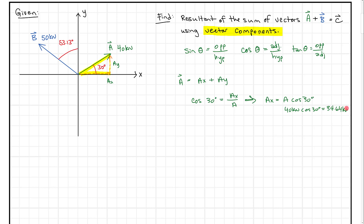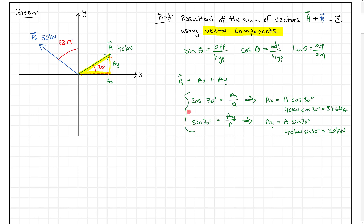Now we'll apply sine. The sine of 30 degrees equals the opposite over the hypotenuse, which is AY over A. So AY equals A times the sine of 30. Plugging in 40 kilonewtons times sine of 30 degrees, we get 20 kilonewtons. Those are the components of the A vector.